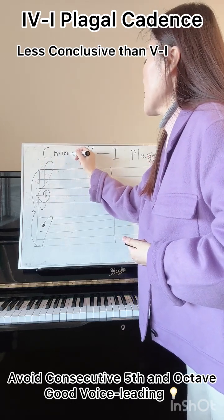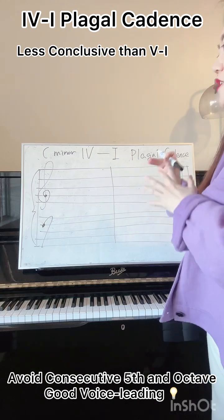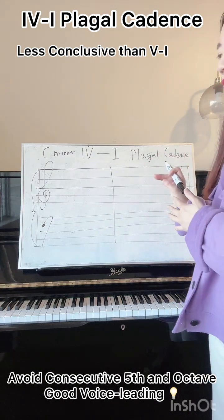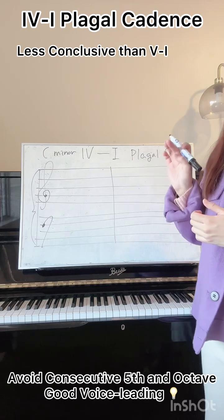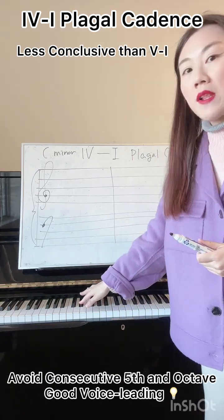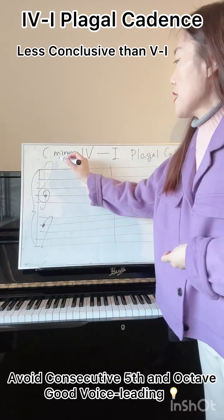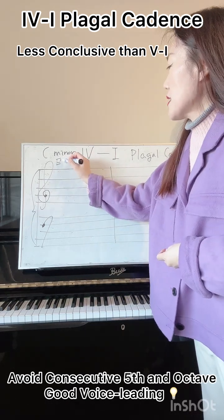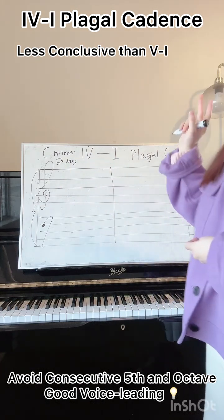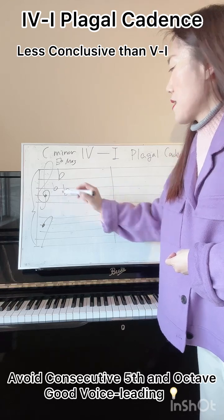Now we're going to ascertain the key signature of C minor by finding the relative major, which is 3 semitones above the relative minor key. The relative major key of C minor is E-flat major. We have to ascertain the key signature of E-flat major, which has 3 flats: B, E, and A.